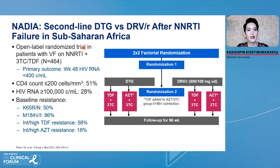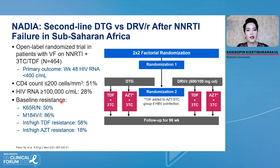Let's move to the other study called the NADIA study — a study regarding second-line dolutegravir versus darunavir/ritonavir after NRTI-based treatment failure in sub-Saharan Africa. This is an open-label blinded endpoint trial. The population is around 464 patients. At baseline, 51% of the patients had CD4 cell count less than 200, and 28% had HIV RNA more than 100,000. Baseline resistance showed quite multi-drug resistance: 50% of patients had K65R, 86% had M184V, and 58% had intermediate or high resistance to TDF.